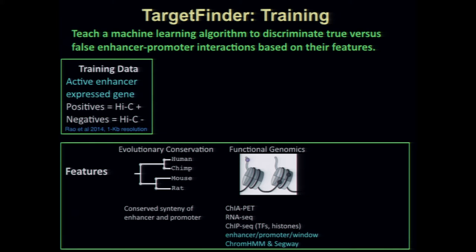Most of the data we used and most of what was predictive were functional genomics experiments — primarily ChIP-seq for transcription factors, histone modifications, and various structural proteins. The key — and I'll tell you more shortly — is that we looked at the enhancer and the promoter, which others have done. The really interesting thing where we learned biology and really improved our predictions was to look at the window in between the enhancer and promoter, to integrate the signal along that piece of looping chromatin. This is different from what I've seen others do before.